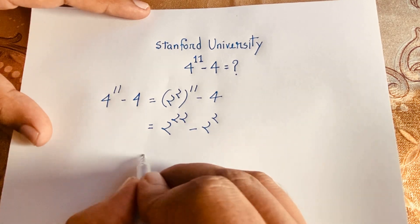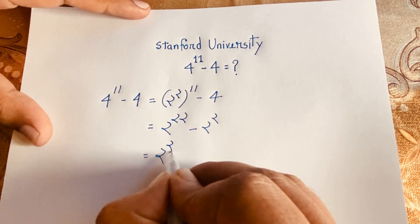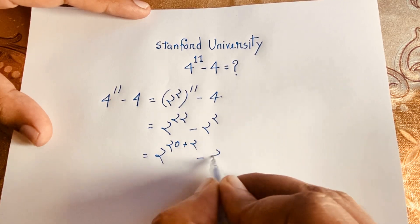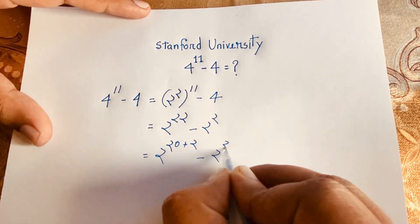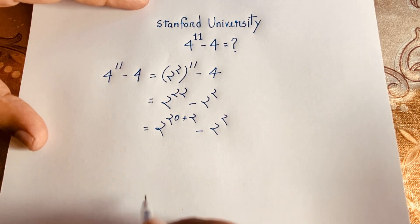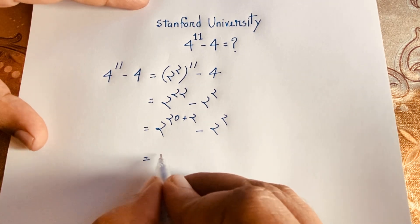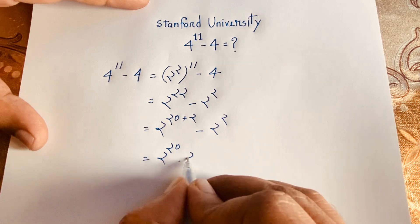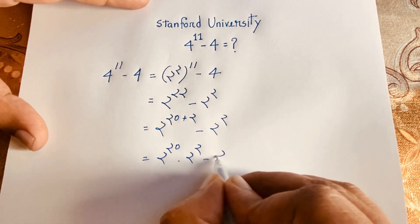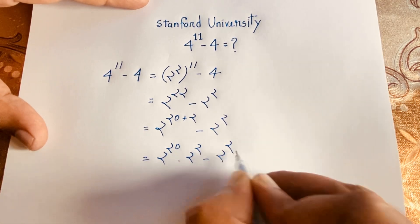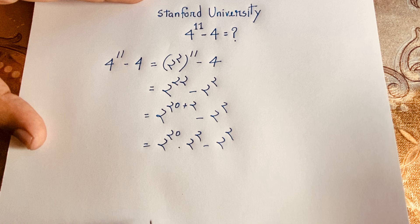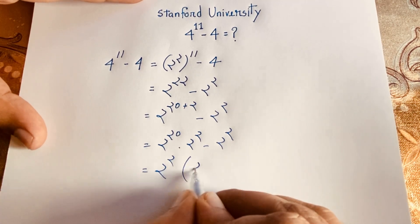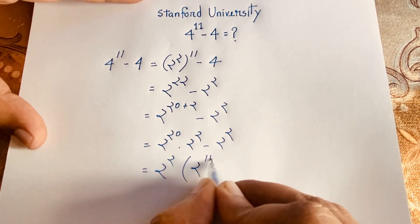In this expression I can see 2 to the power 20 plus 2, minus 2 to the power 2. Then I can write this as 2 to the power 20 times 2 to the power 2, minus 2 to the power 2. Here 2 to the power 2 is common, so factoring it out gives 2 to the power 2 times the quantity 2 to the power 20 minus 1.